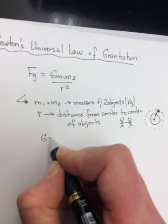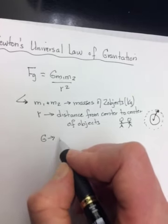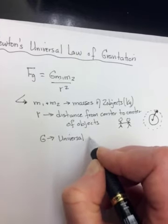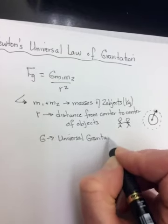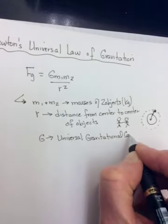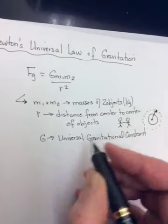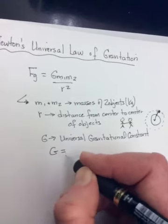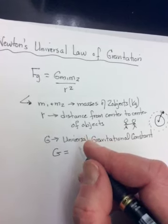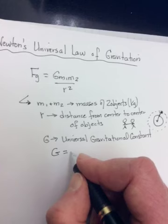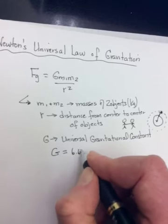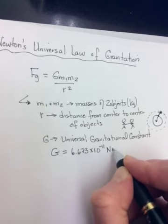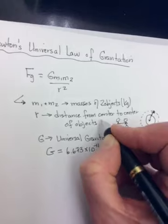And then capital G is known as a universal gravitational constant. Universal means it is the same value no matter where you are in the universe. On the surface of the Earth, speeding towards the Sun, floating in the atmosphere of Jupiter, capital G is going to equal 6.673 times 10 to the negative 11 newton meters squared per kilogram squared.